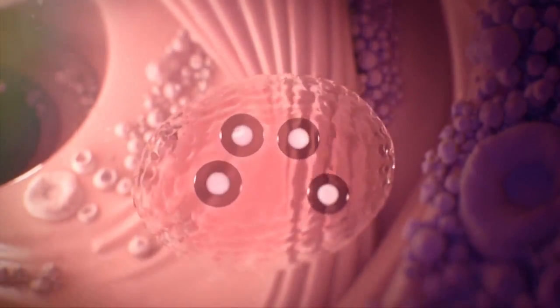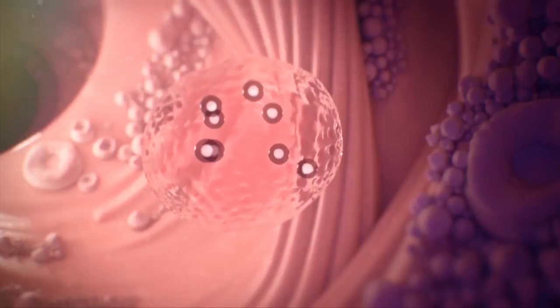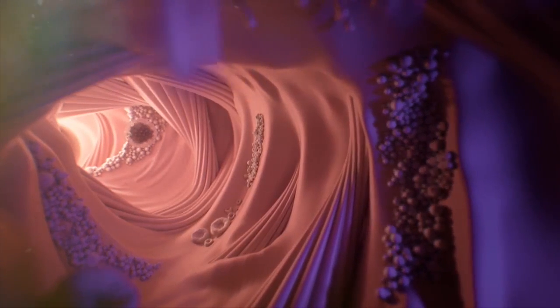The zygote starts to divide into a cluster of cells and begins to travel to the friendly and safe habitat of the uterus. When the zygote is divided into a bubble of cells,